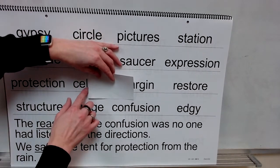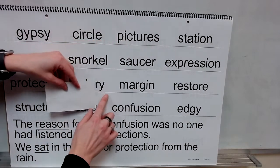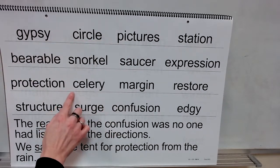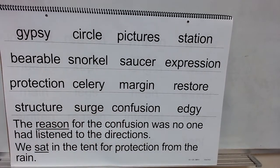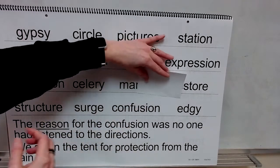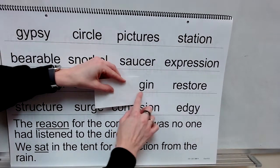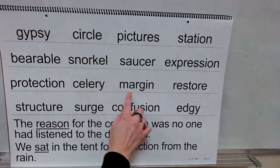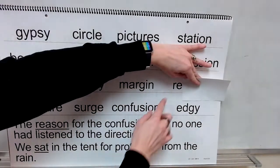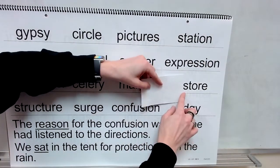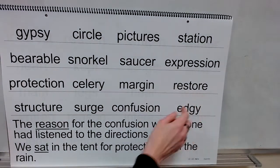Syllable: cell. Syllable: herb. Syllable: E. Blend it. Word: celery. Syllable: mar. Syllable: gin. Word: margin. Prefix: re. Base word: store. Word: restore.